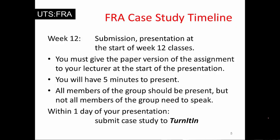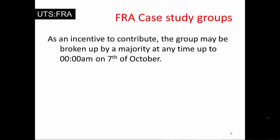We will randomly check electronic submissions to make sure they agree with the paper copy. If your paper copy doesn't agree with the one you electronically submitted, that's academic fraud and will result in zero. One more thing: a group can be broken up by the majority anytime up to the 7th of October. This is meant to be an incentive for every member of the group to participate. If you are not participating in your group's work, on the 7th of October you may find yourself without a group and without an assignment.